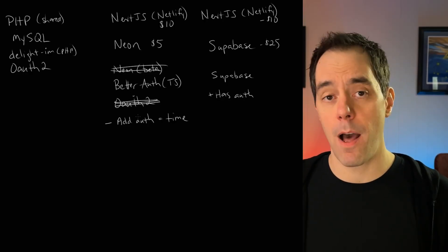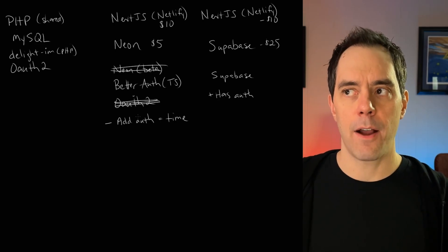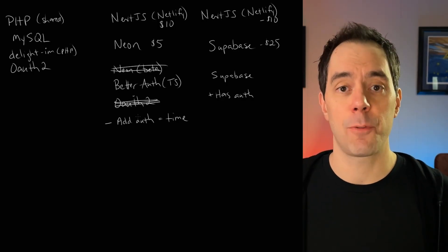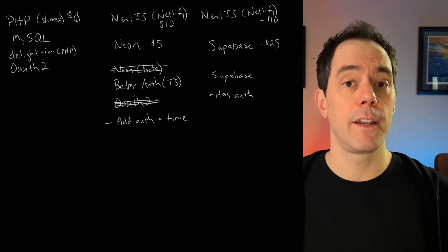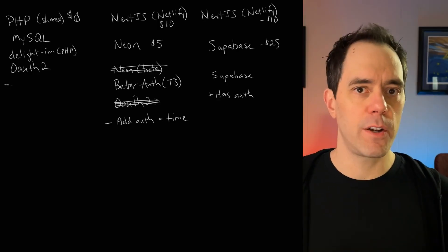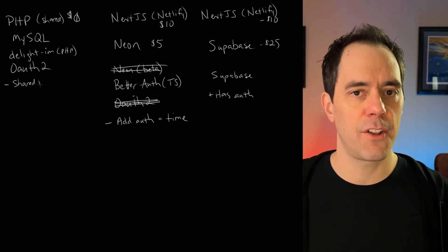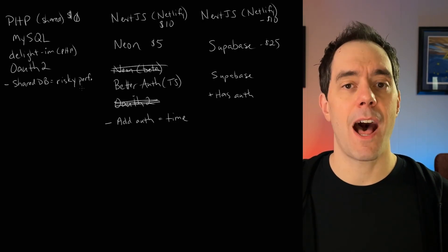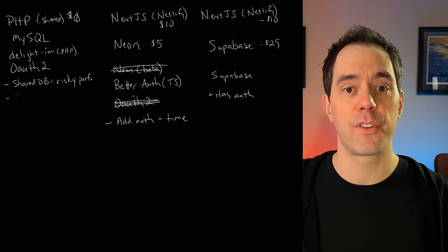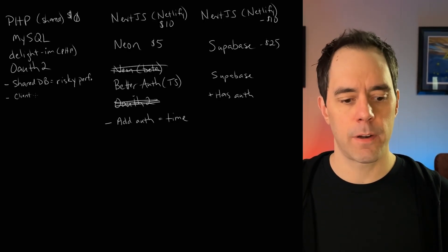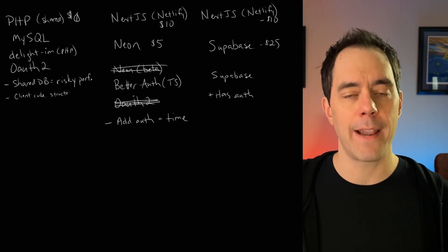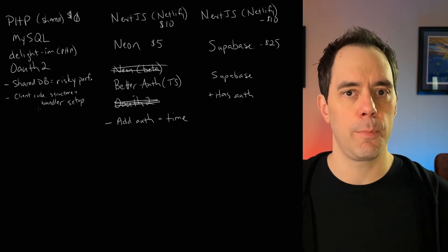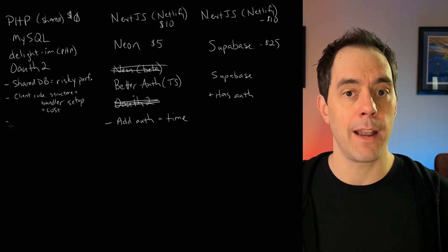The Neon with BetterAuth stack will cost about $15 a month, but there's also the time cost of figuring out BetterAuth, adding it into the application, and getting the database tables set up. The PHP solution won't cost any money since I'm already paying for the shared hosting, but there are hidden costs and risks. The shared database can get slow when load is high from other users. I'll also need to spend time deciding on the client-side code structure — figuring out what bundler to use, whether to use vanilla JS or React, and how to bundle it down to something the browser can run — all adding overhead that will slow down shipping the product.